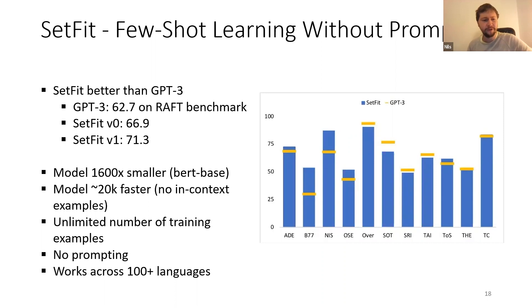What really excited me is first the model is 1600 times smaller. SetFit works with a BERT base model and you don't need a 175 billion parameter model. Also the model is around 20,000 times faster or maybe even 100,000 times faster because you don't have these in-context examples which add a lot of compute.